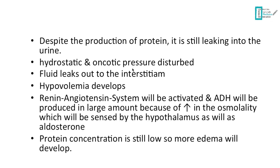When fluid leaks out of the vessels, hypovolemia also develops. When hypovolemia develops, perfusion of blood to the kidney decreases, so the renin-angiotensin system is activated. Angiotensin II is a very powerful vasoconstrictor, leading to hypertension. Also the osmolality of the blood increases, sensed by the hypothalamus, so antidiuretic hormone is released. Aldosterone is also secreted. All these mechanisms retain water from the kidney, but since protein is still decreased in the blood, we will have more edema — the patient becomes more edematous.